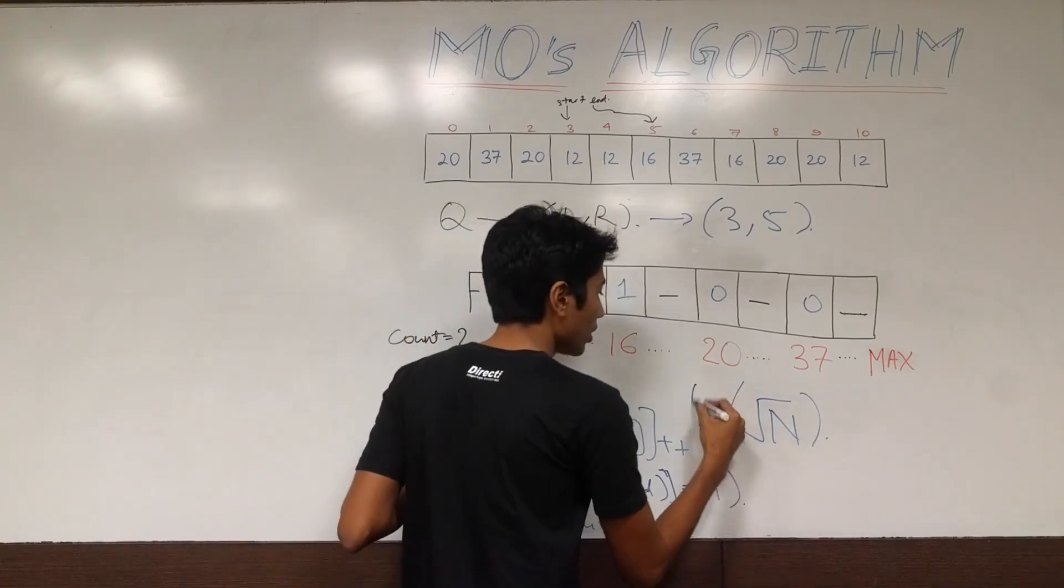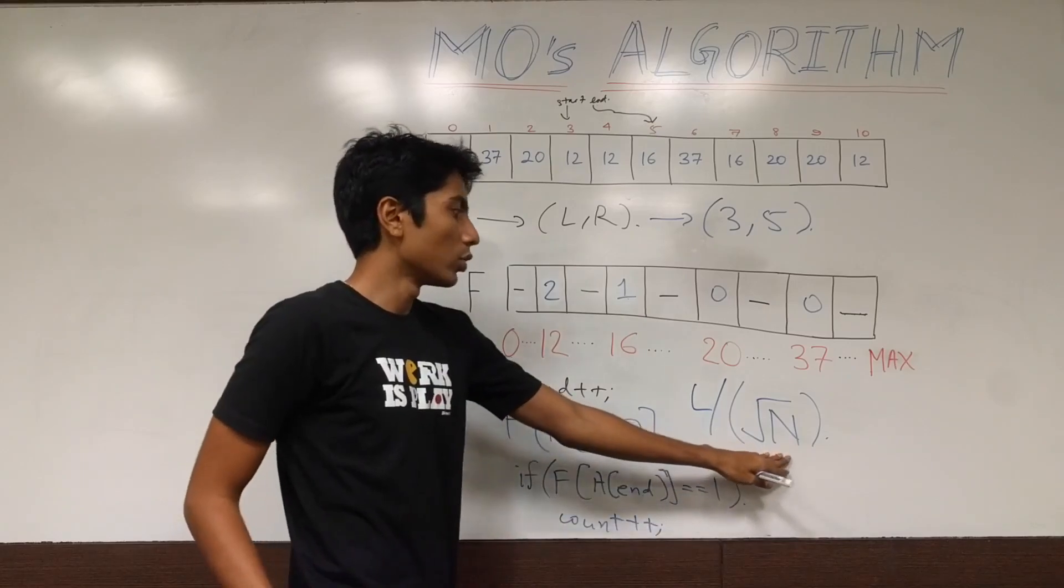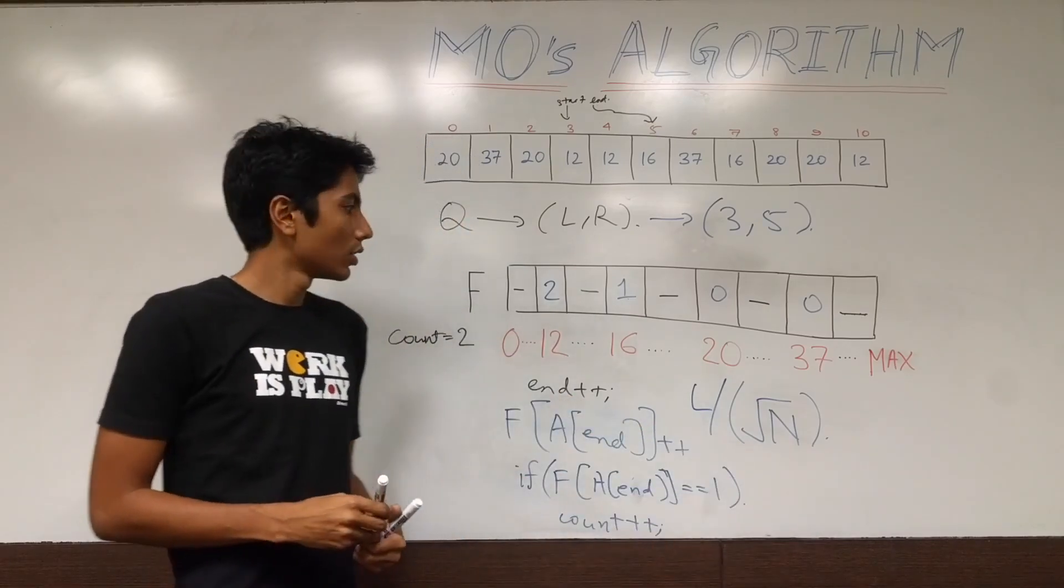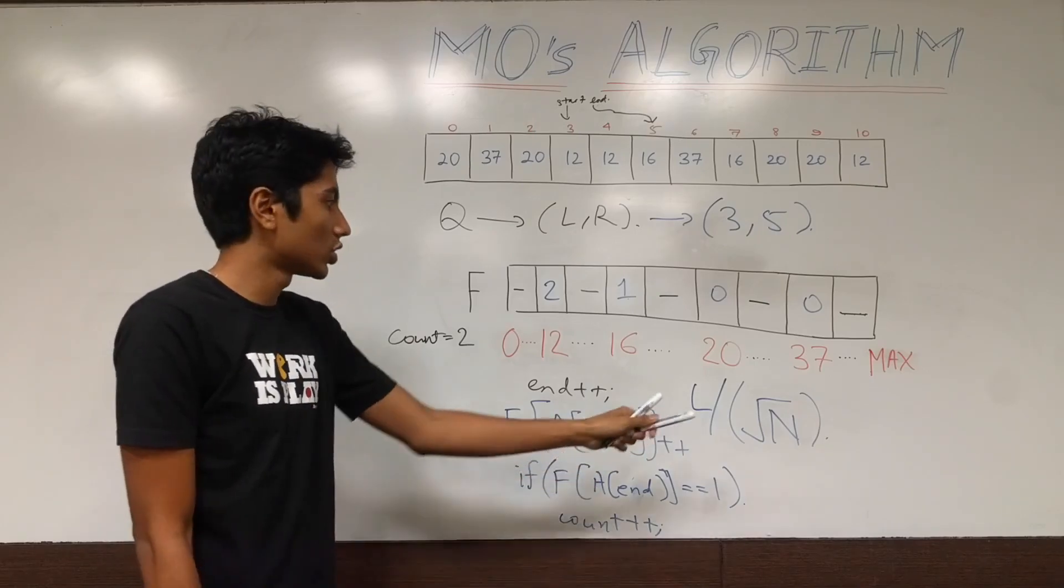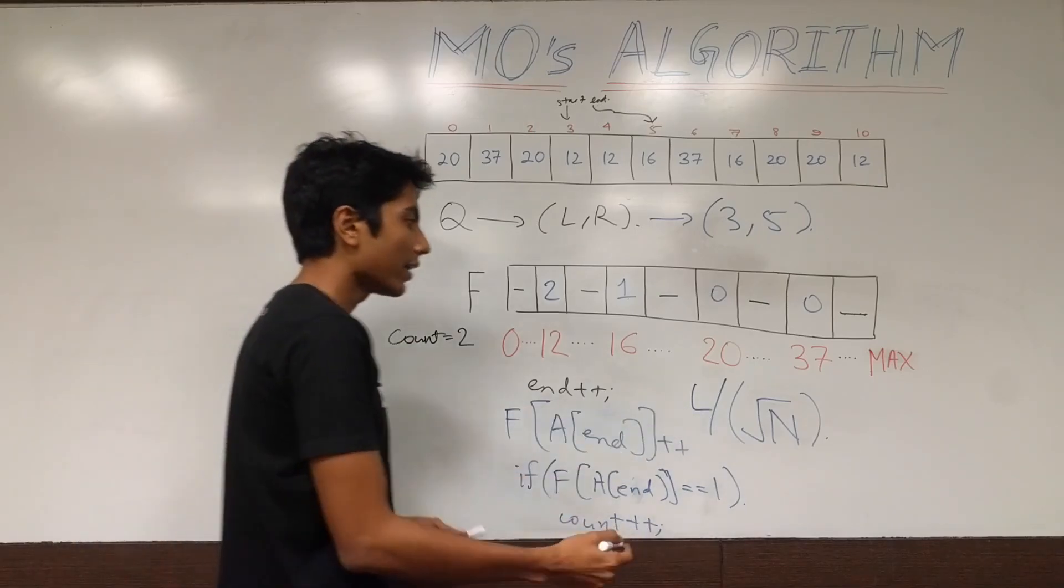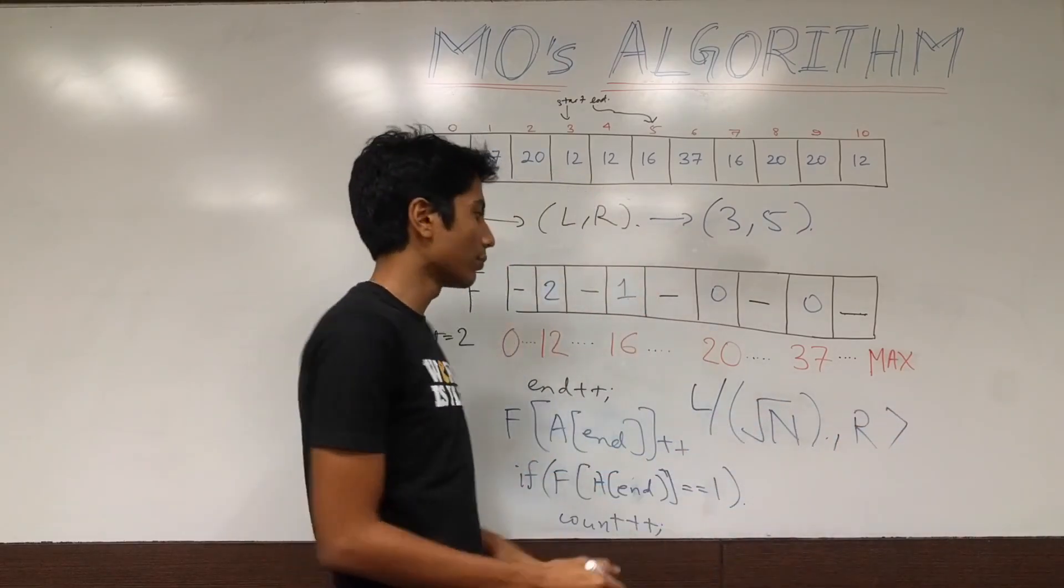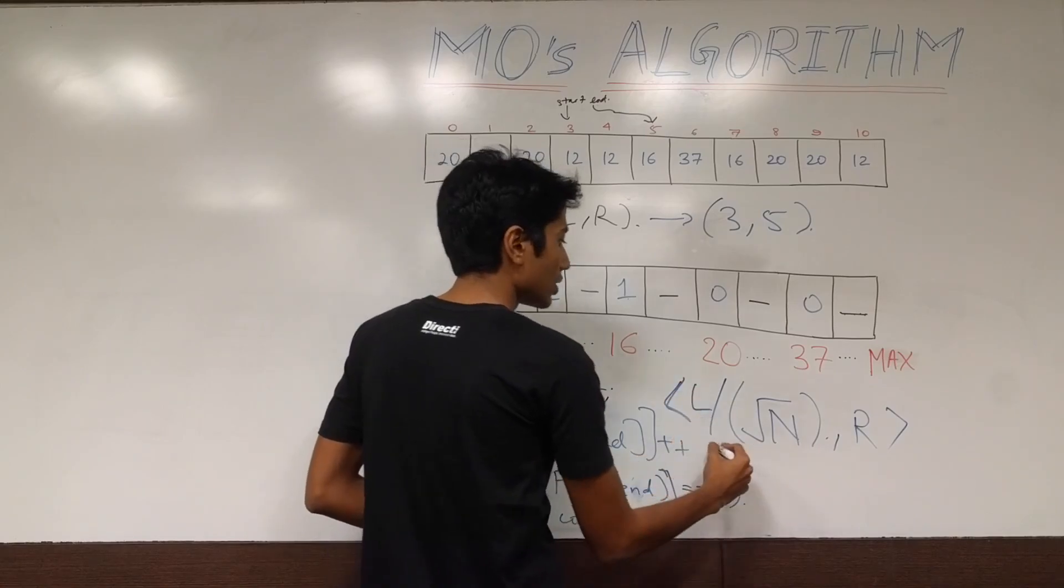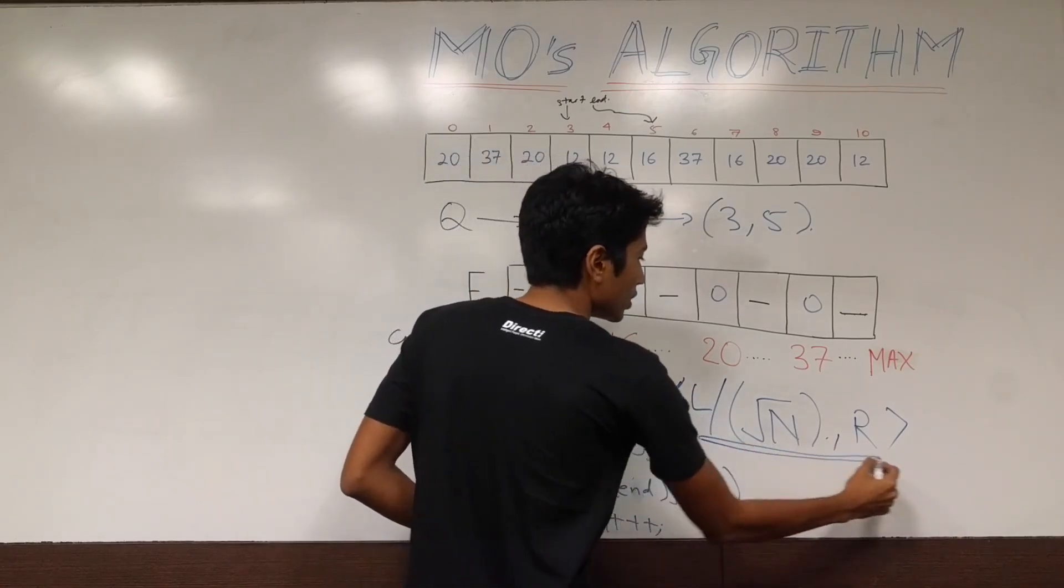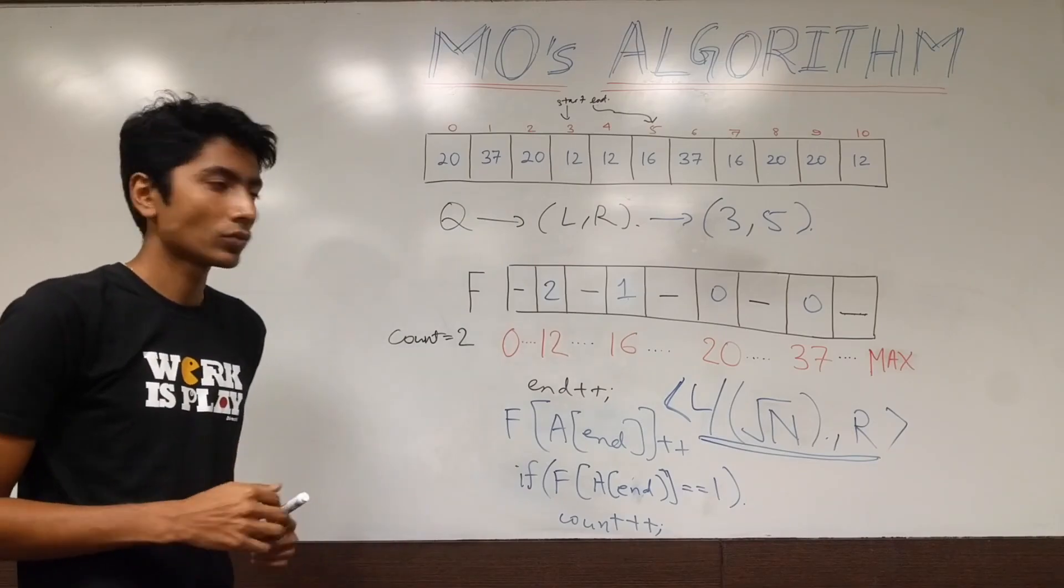Then you are going to be taking not the left index exactly, but the block index at which left falls. So, that would be l divided by root n. That will give you the index, the block index at which left falls. And, right will be sorted just by the index. You don't need to take any block index. So, these are the two parameters on which we will be sorting our queries in ascending order.